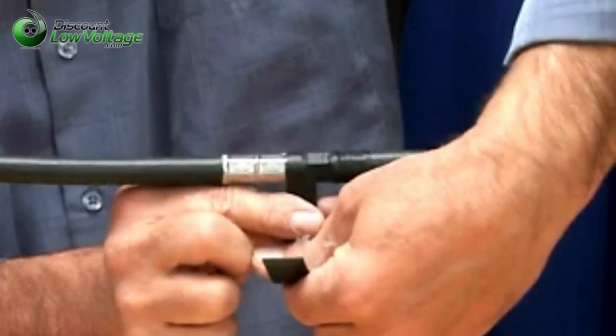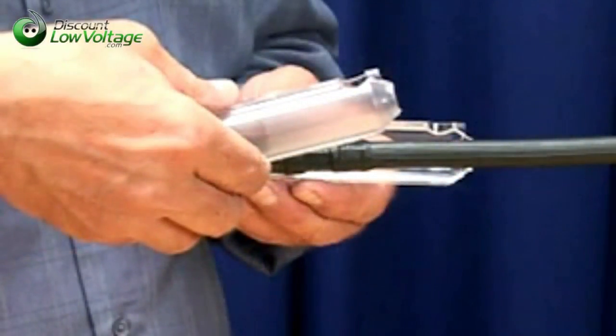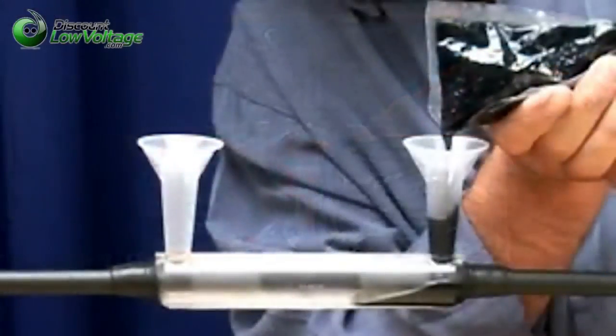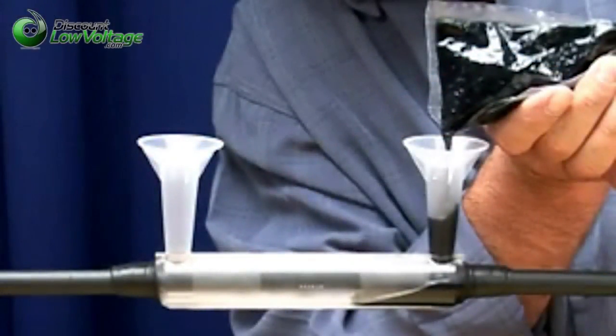The 3M brand 82A series is UL listed 486D file number E102356. The 82A series power cable splice kits are designed for use in weather exposed, direct buried or submersible locations.